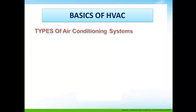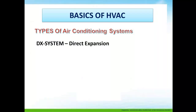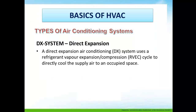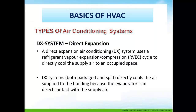Types of air conditioning systems. The basic type is DX — direct expansion. A direct expansion air conditioning system uses a refrigerant vapor compression cycle to directly cool the supply air to an occupied zone. DX systems — both package and split — directly cool the air supplied to the building because the evaporator is in direct contact with the supply air.